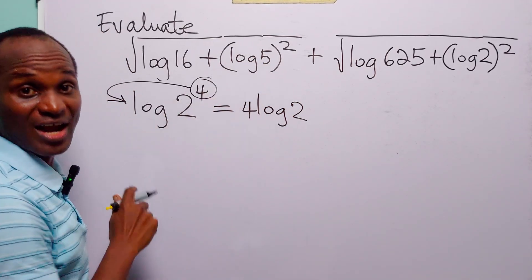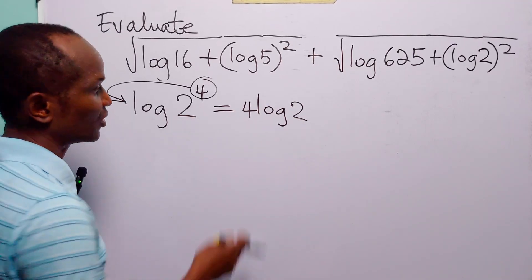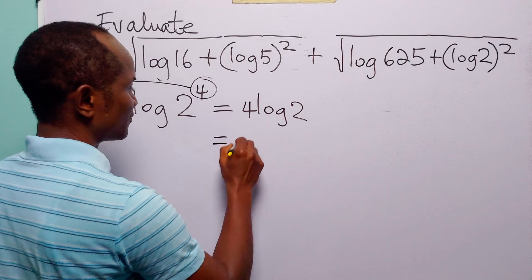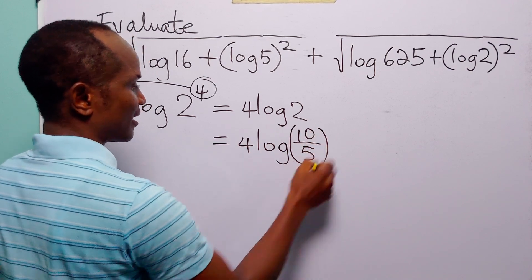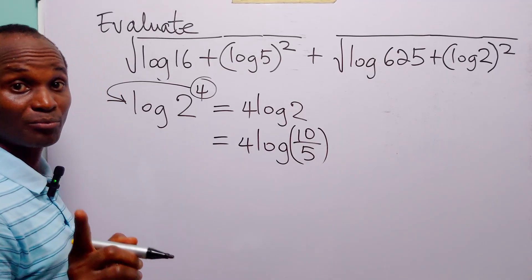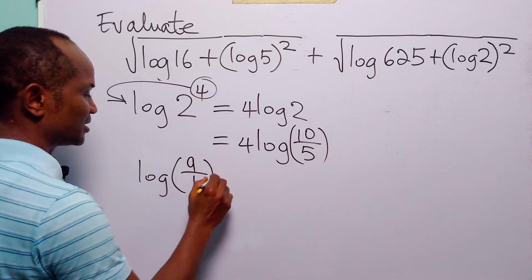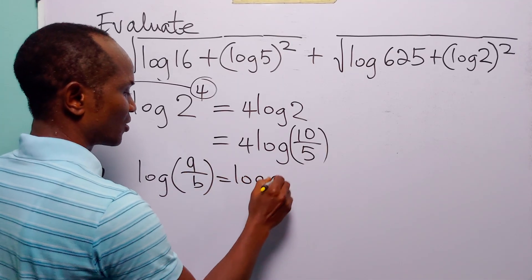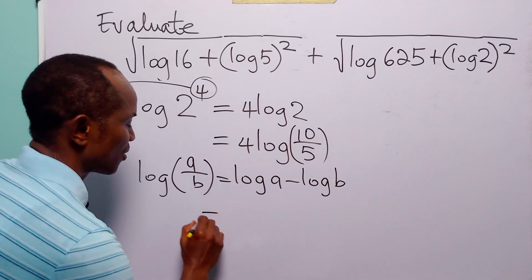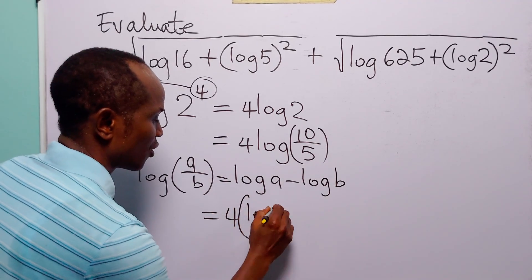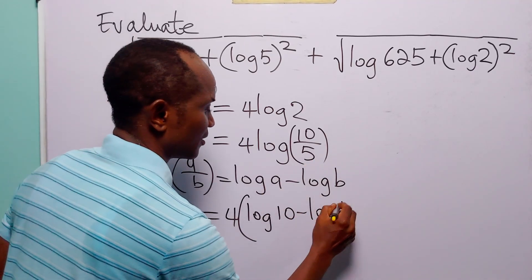Now since we have 5 in this term, let us write 2 as 10 divided by 5. So this is going to be equal to 4 times log(10/5). Remember that log(a/b) is equal to log a minus log b, so this is equal to 4 times (log 10 minus log 5).